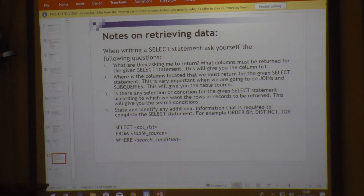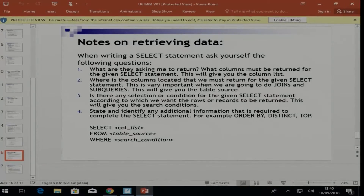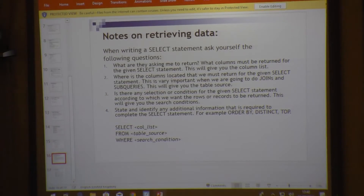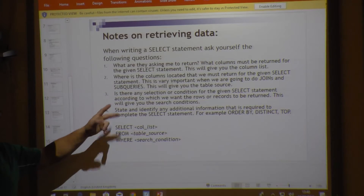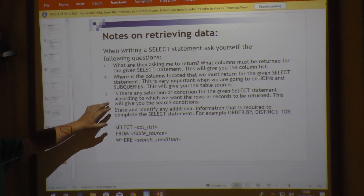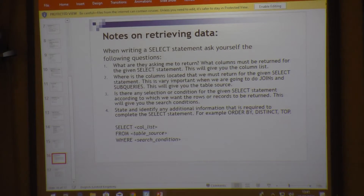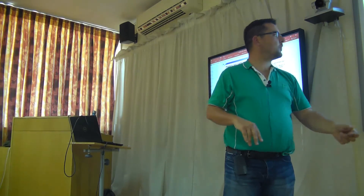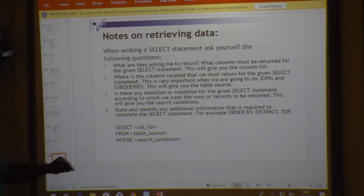When retrieving data, ask yourself: what am I being asked to return? What columns must be in the SELECT statement? In which table is this data located? Is there any selection or condition — a WHERE clause — for the given SELECT statement? Also identify any additional requirements such as ORDER BY, DISTINCT, TOP, or calculations.